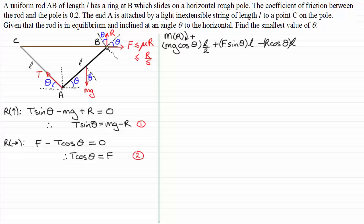Setting the resultant moment to zero for equilibrium and noting that L appears in every term, we can cancel L throughout. There is no tension T in this moments equation, so we need to eliminate T from the resolving equations first.